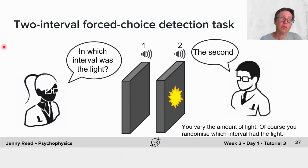If you want to know how sensitive somebody is to light, a better way to do this experiment is with a two-interval forced choice detection task. On every trial, you have two intervals and you can signal these with some audio cue, like beep, beep. On one of them, the screen is blank. In the other, there's a flash of light. You randomise which interval contains the light.